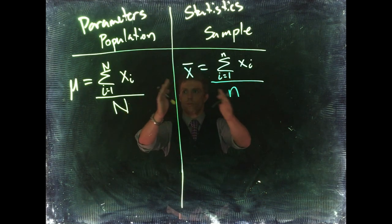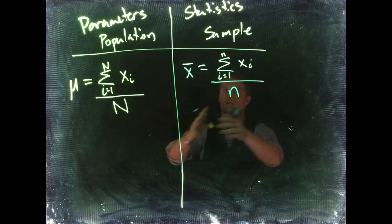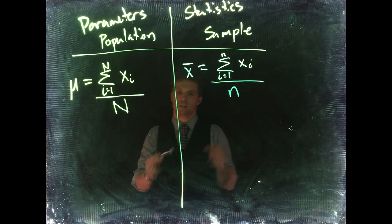We want to take all the measurements of our sample and then divide by our sample size. So we can start to see the difference between the calculations of our population and our sample, of our parameters and our statistics.